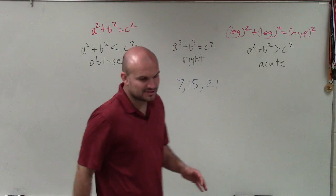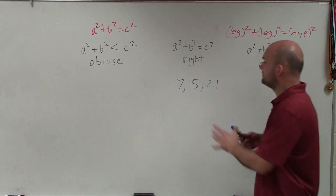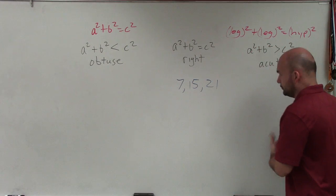Welcome. I'd like to use the Pythagorean Inequality Theorem to help us identify if the three sides of my triangle are going to be obtuse, right, or acute.